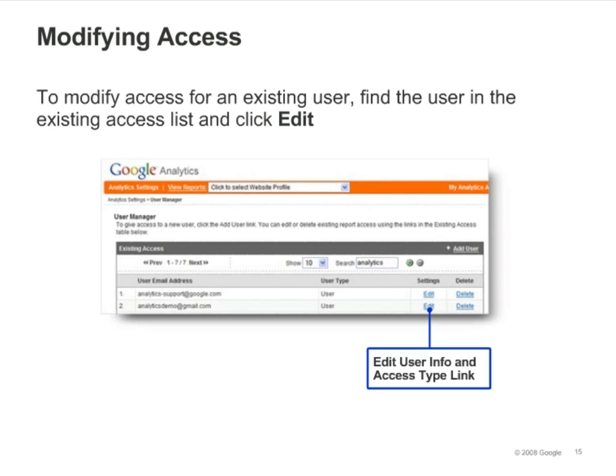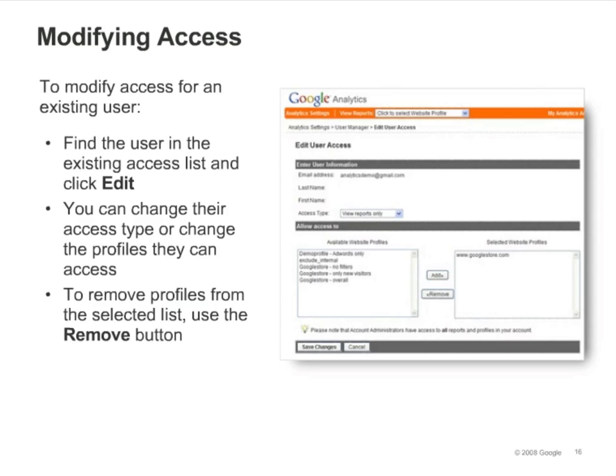To edit the access settings for an existing user, go to the User Manager and click Edit next to the user. You can change their access type, and you can add or remove access to specific profiles. Select the profiles you would like to remove report access to, and click on the Remove button.